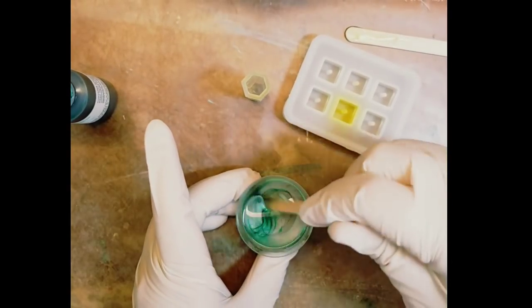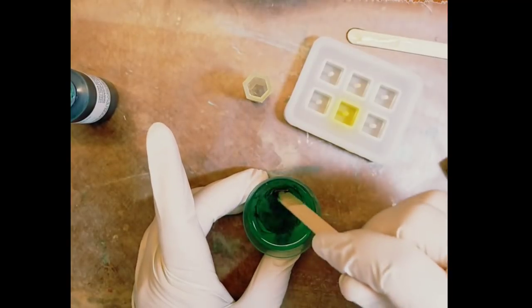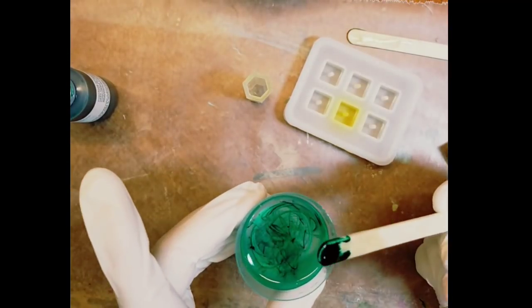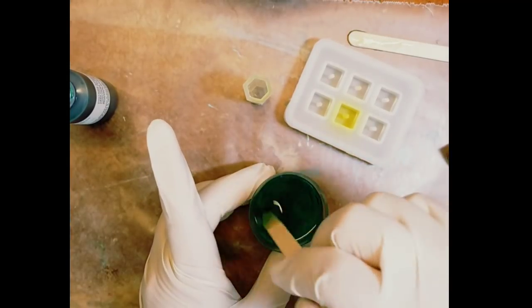At this point you can decide to just mix it a little bit and you'll end up with some really nice swirls in your resin. Or you can do what I did which is just mix it thoroughly and you'll end up with one solid transparent color.